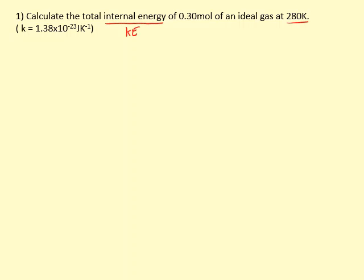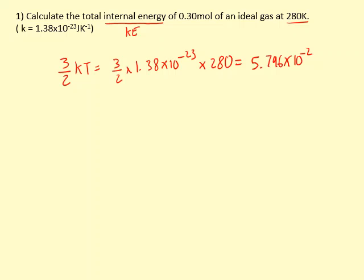To find the internal energy of just one particle, I get 5.796 times 10 to the minus 21 joules.